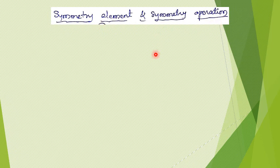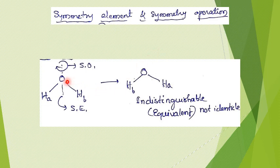Let me illustrate this with the help of a water molecule. On this water molecule, I can imagine an axis — as indicated here. This imaginary axis will be called a symmetry element. It is imaginary; there will not be anything like this in reality. We imagine an axis in the molecule so that we can perform operations with reference to it.